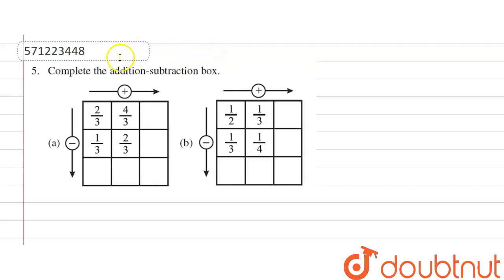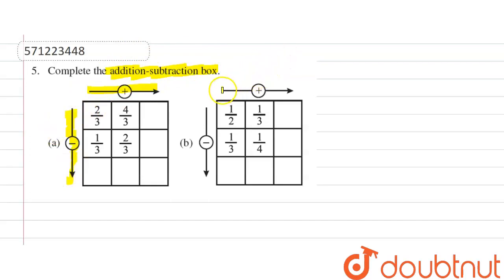Hello guys, the question is to complete the addition subtraction box. We have to add on this side and subtract on this side. In the second portion, we also add on this side and subtract on this side. From left to right we add, and top to bottom we subtract.